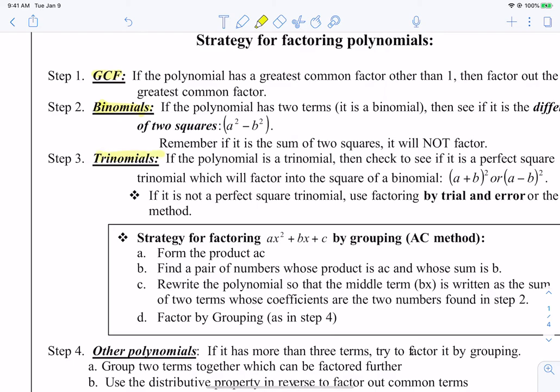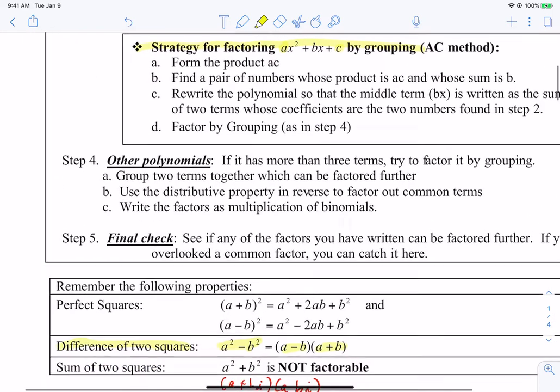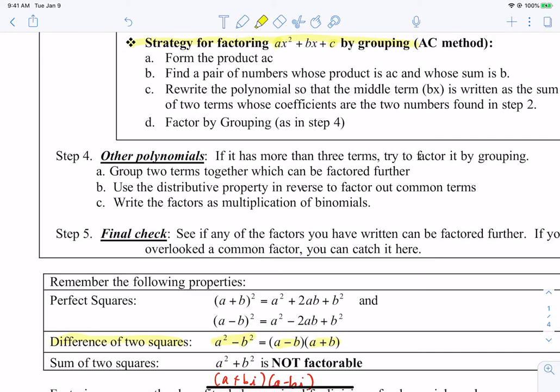So the first step was remove any common factors. Second step, does it have two terms? If it does, try one of those formulas that I showed you. If it has three terms, then we're going to do the whole strategies for factoring. You know, you can do your slide and divide, guess and check. We're trying to look for two numbers related to A and C that add up to the middle term.